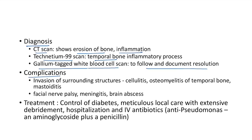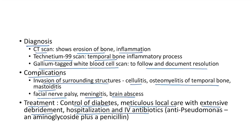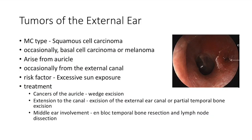Complications of malignant otitis externa include invasion of surrounding structures leading to cellulitis, osteomyelitis of temporal bone, and mastoiditis. There can also be facial nerve palsy, meningitis, and brain abscess. Treatment includes control of diabetes, meticulous local care with extensive debridement, hospitalization, and IV antibiotics — anti-pseudomonal antibiotics: an aminoglycoside plus a penicillin.